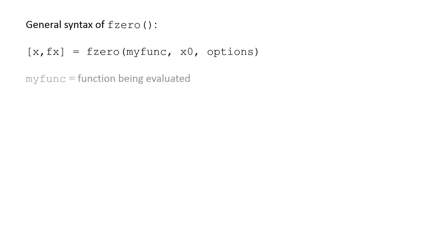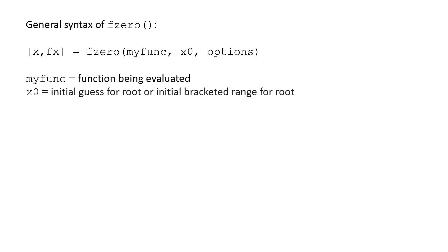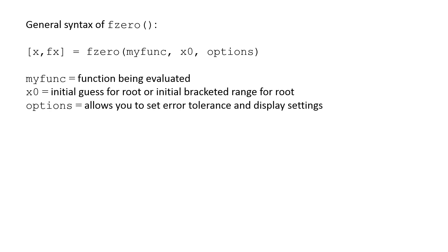The first argument, myfunc, is a function or a reference to a function that we want to find the root for. The second argument, x0, is the initial guess for the root or an initial bracketed range for the root. The last argument, options, allows you to set error tolerances and display settings. If you do not include the third argument, default settings will be used.